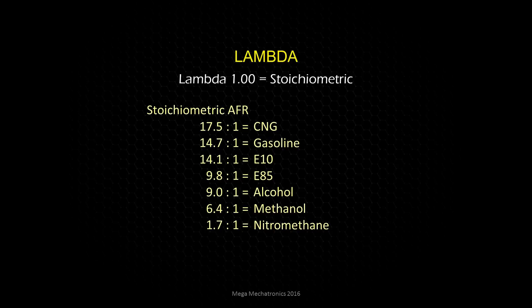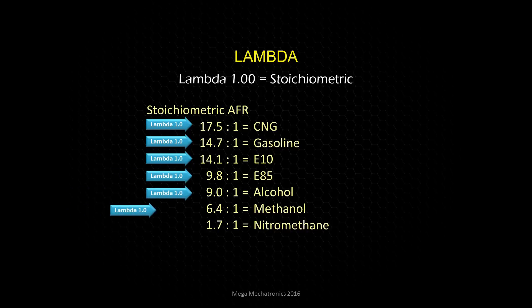Let's look at some popular fuels and their stoichiometric air-fuel ratios — these are theoretical, chemically perfect ratios. For compressed natural gas, it's 17.5 pounds of air per pound of fuel. For E85, it's 9.8 pounds of air per pound of fuel. For methanol, it's 6.4 pounds of air per pound of methanol. When any of these fuels are running at their respective stoichiometric ratios, it will read Lambda 1.0, even if you're using the same gauge to measure all of them.